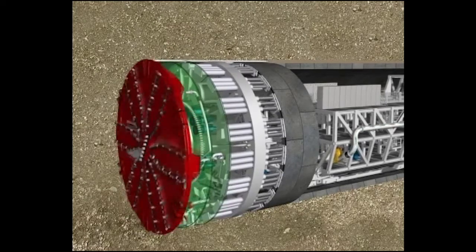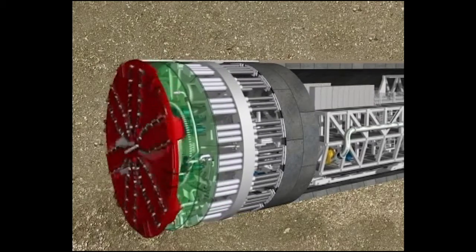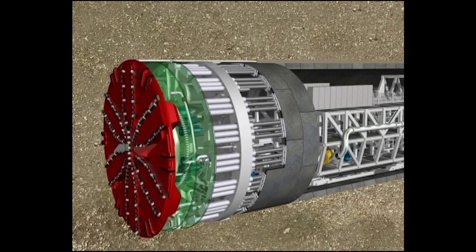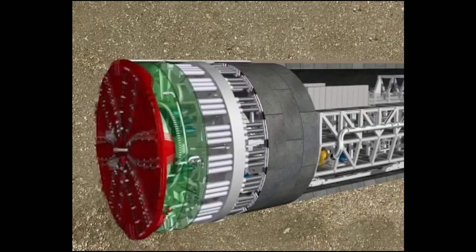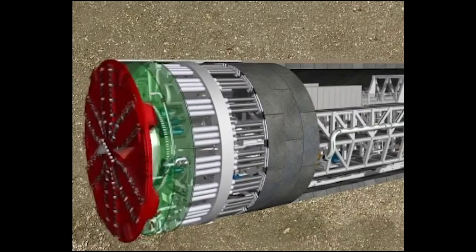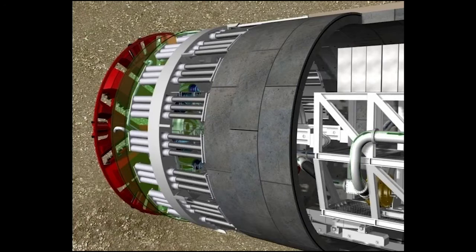The rotating cutting wheel is pushed ahead by the hydraulic cylinders, and the material at the tunnel face is being excavated and removed through the suction line. You can now see the successive intervals: tunneling, segment installation, tunneling, and so on, in fast motion.